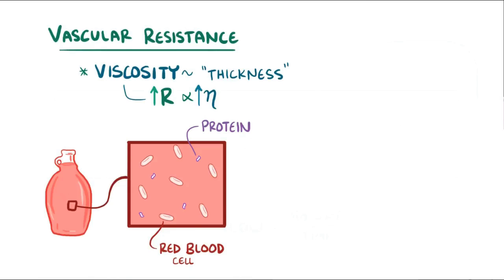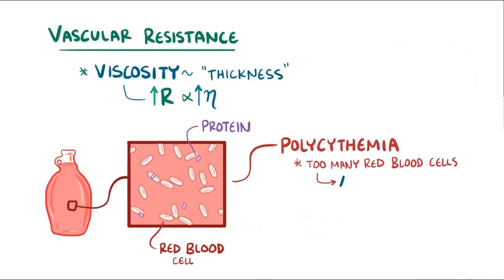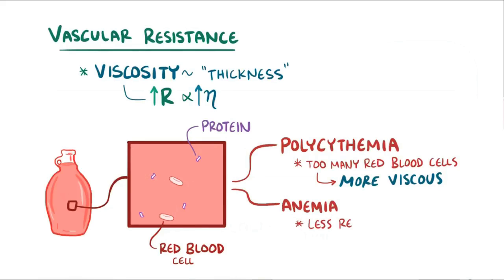Blood viscosity doesn't change much over time, but certain conditions like polycythemia, which is where a person has too many red blood cells, can increase viscosity, and conditions like anemia, where a person doesn't have enough red blood cells, can decrease viscosity.